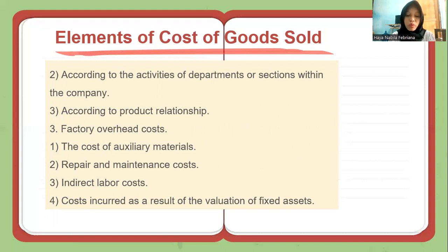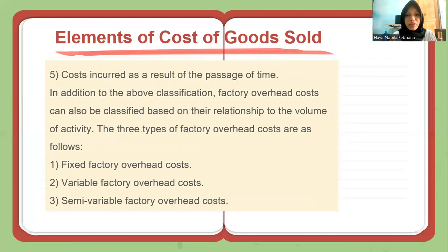The third component is factory overhead costs, including the cost of auxiliary materials, repair and maintenance costs, indirect labor costs, costs incurred as a result of the valuation of fixed assets, and costs incurred as a result of the passage of time. Factory overhead costs can also be classified based on their relationship to volume or activity into three types: fixed factory overhead costs, variable factory overhead costs, and semi-variable factory overhead costs.